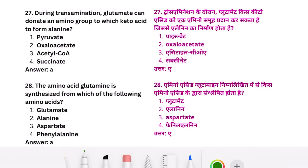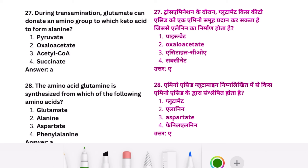During transamination, glutamate can donate an amino group to which keto acid to form alanine? This is a very easy question — pyruvate.